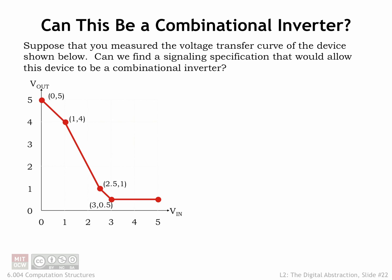Let's look at a concrete example. This graph shows the voltage transfer characteristic for a particular device and we're wondering if we can use this device as a combinational inverter.